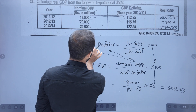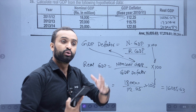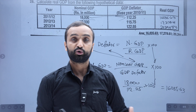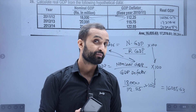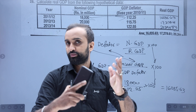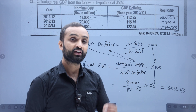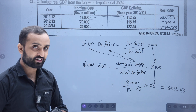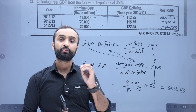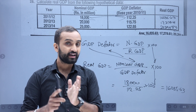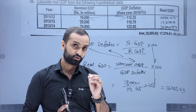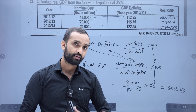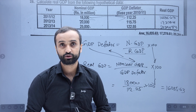Nominal GDP equals GDP deflator into real GDP. If you want to find the GDP deflator or real GDP, you can rearrange the formula accordingly. In the next video, you will see long analytical questions related to GDP deflator and real GDP. There are about 15 maximum questions related to this. Namaskar.